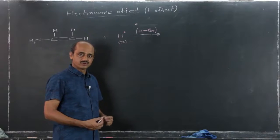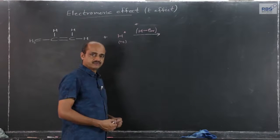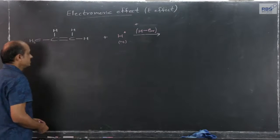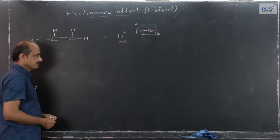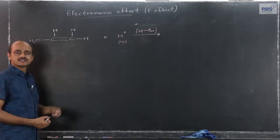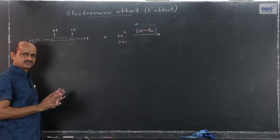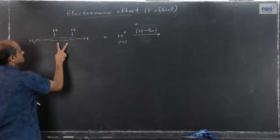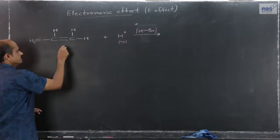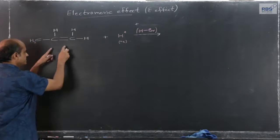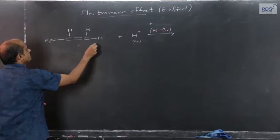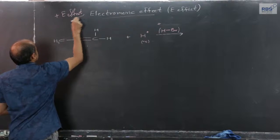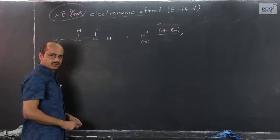We will consider two examples one by one, and then it will become clear what is positive electromeric effect and what is negative electromeric effect. Here I have selected the example of propene — it can be any alkene. Alkene plus HBr: HBr gets added across the multiple bond, the pi bond. This is going to be an example of positive electromeric effect — plus E effect. Let us see how and why.